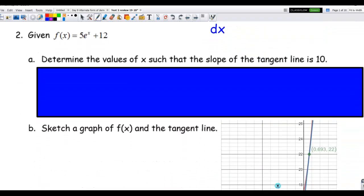In problem number two, we have an exponential function 5e to the x plus 12. And read very carefully: Determine the values of x. So we're trying to find x such that the slope of the tangent line, so you've got to learn how to translate. Slope of tangent line is either instantaneous rate of change or derivative, and is in mathematics generally means equal 10. So right here the words are telling me derivative is 10. So that tells me I want to find the derivative of f of x, f prime of x, and set that equal to 10.